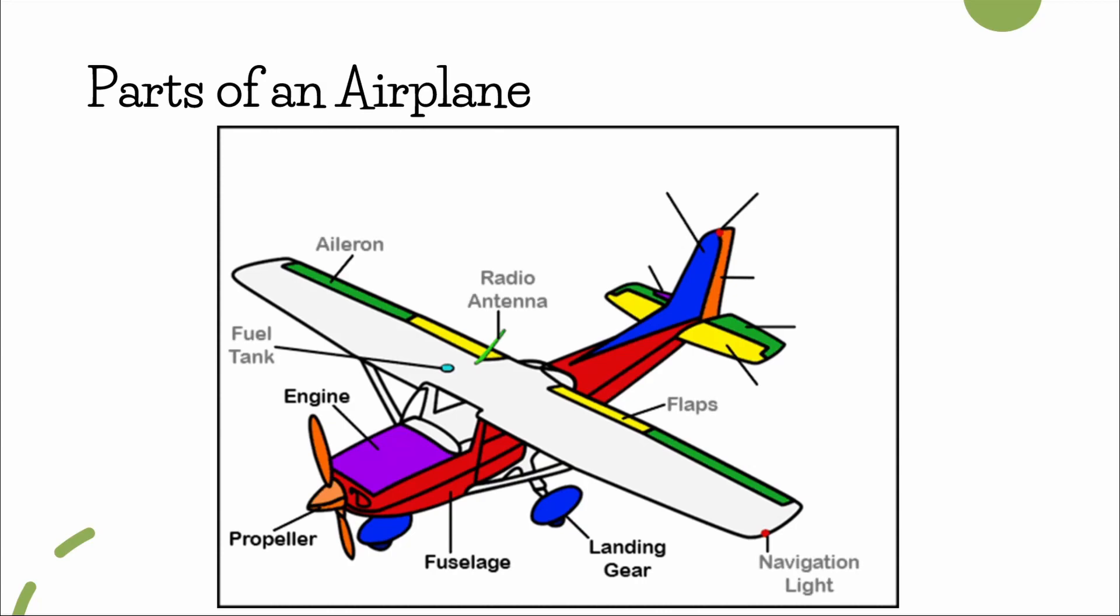Let's move on to the wings, which have a surprising amount of important components. Starting from the center of the wing, you have the radio antennas that are mainly used for communication with air traffic control and navigation purposes. There is also the fuel tank that stores all the fuel that powers the piston-powered engines.